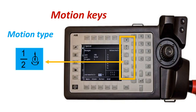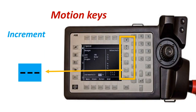Another Motion Type: press this key to access axis movement. Increment: press this key to toggle incremental jogging on and off.